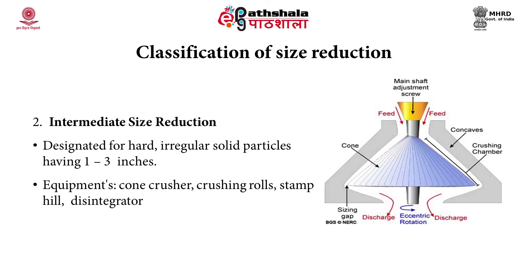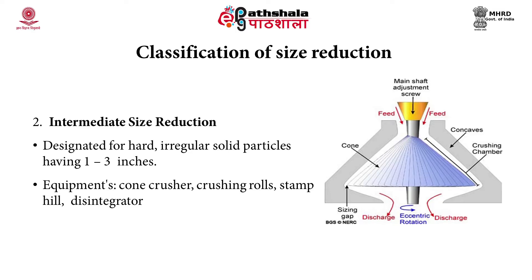Intermediate size reduction is designated for hard, irregular solid particles having a size range of 1 to 3 inches. Equipments used include cone crusher, crushing rolls, stamp mills, and disintegrators. Fine size reduction covers particles of 0.25 to 0.5 inches, which can be hard and irregular. Equipments used include ball mills, tube mills, and roller mills, which are types used for high energy milling.